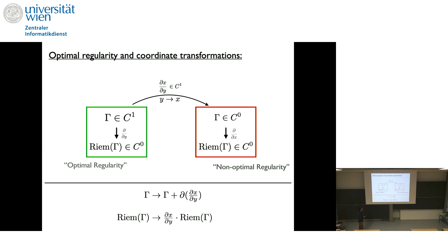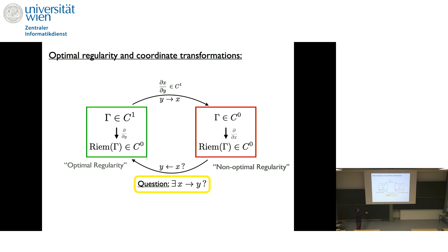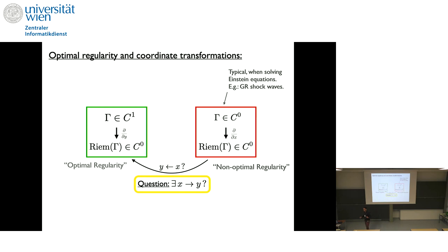This is a built-in property: the regularity of the curvature tensor is maintained while the regularity of the connection can change, because of differences in the transformation laws. So the question of this talk is: when you're in the red box, can you always transform back to the green box? You start in the red box with no idea how you got there — you only have the connection and its curvature. Can you always go back by coordinate transformation? That is the problem of optimal regularity.